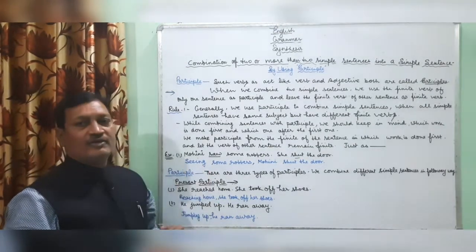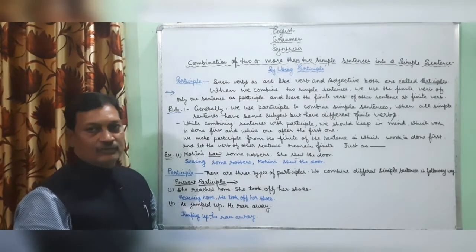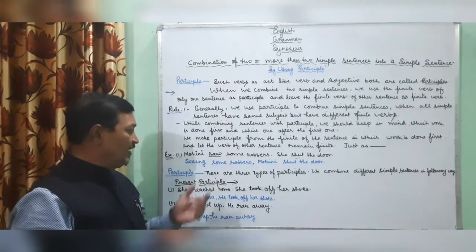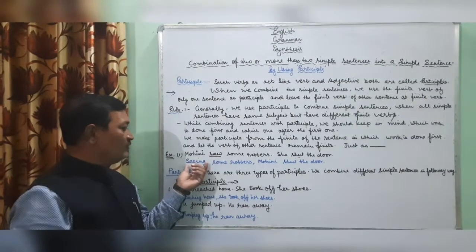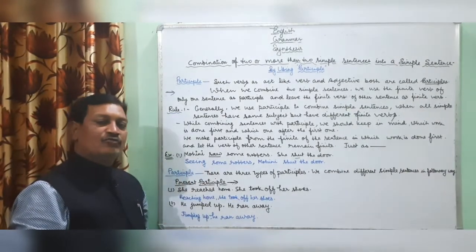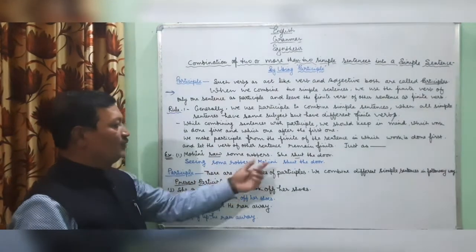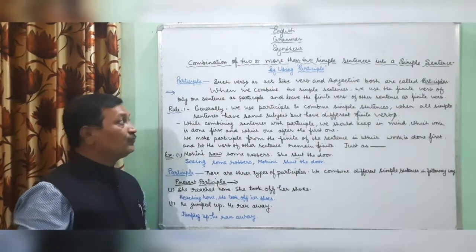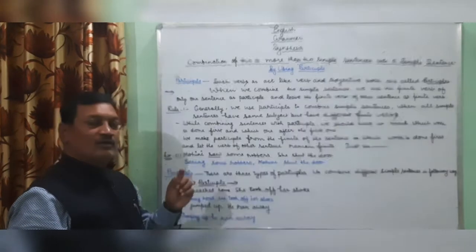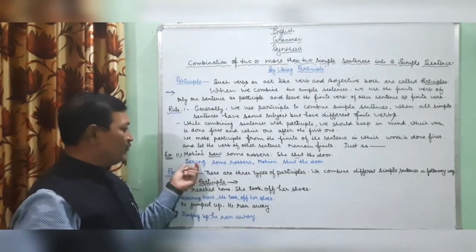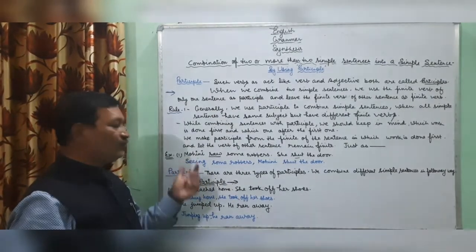We use present participle to combine two simple sentences into a simple sentence. That's why I changed 'saw' into 'seeing' to make it present participle. 'Seeing some robbers, Mohini shut the door.' Present participle is made by adding 'ing' to the first form of the verb, so I added 'ing' to the first form.